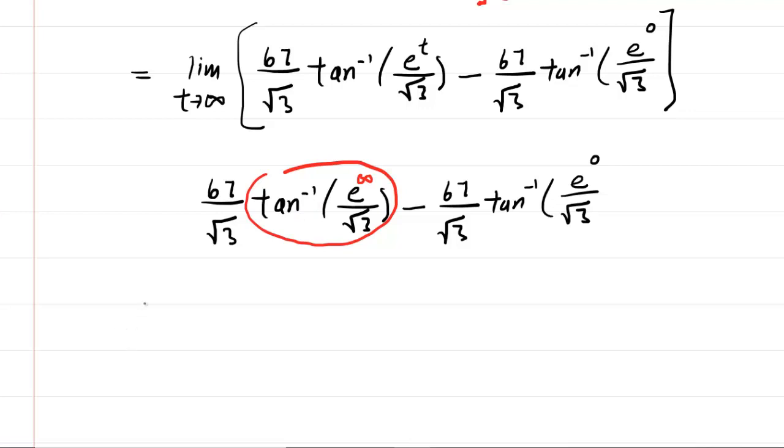It might be helpful to recall the graph of the inverse tangent function. We can see that as x approaches infinity, the inverse tangent function actually approaches an upper bound, and this upper bound happens to be π over 2. So what we've circled in red will become π over 2.